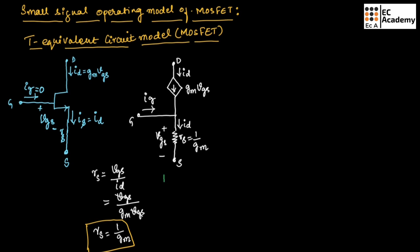This is the T equivalent circuit for MOSFET without internal resistance R0. This equivalent circuit is known as a voltage controlled current source. Since this current source is controlled by VGS, the voltage across gate and source terminal, this T equivalent circuit is called a voltage controlled current source.